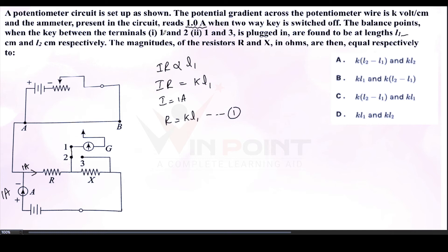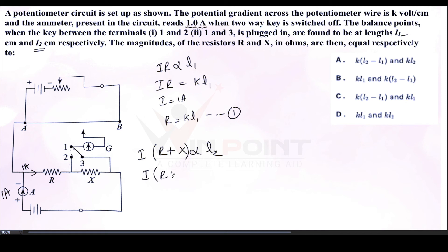In the second situation, we disconnect 1 and 2 and instead connect terminals 1 and 3. Now both resistors R and X are in the circuit. Current flows through R and then through X to the galvanometer and jockey — these two resistors are in series. The effective resistance is R + X. With balancing length L2, we write I·(R + X) = k·L2. Since I = 1 Ampere, this gives R + X = k·L2.